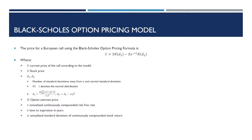So let's have a look at the Black-Scholes option pricing model. Basically, this model enables us to price a European call option. A European call option is one that enables you to purchase the underlying stock at a predetermined price on the expiration date. Now importantly, we're looking at calls and not puts. In the put-call parity theorem, which we'll get to later, we'll be pricing puts and that will be based upon the call value that we're getting here.